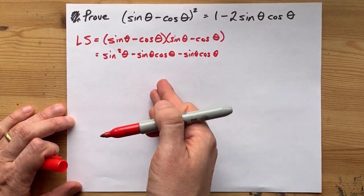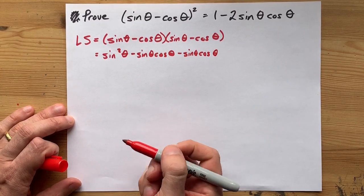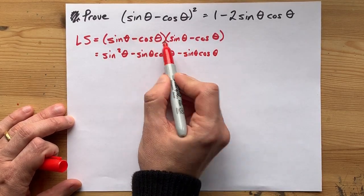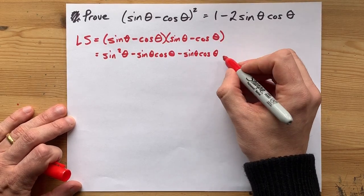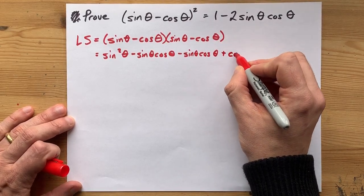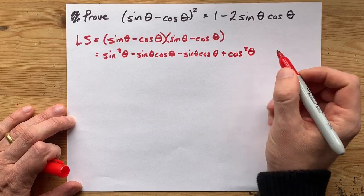Then I have negative cos times another negative cos theta. That gives me plus cos squared theta. Cool.